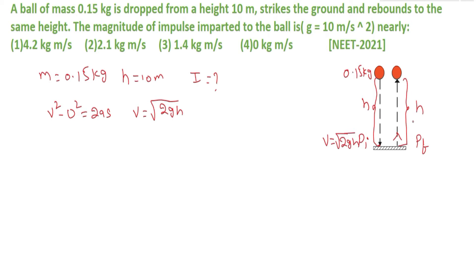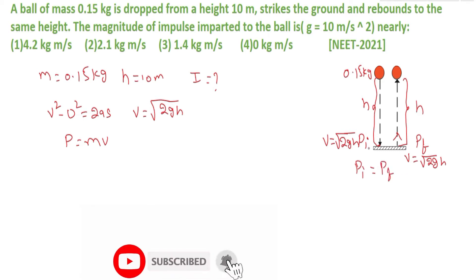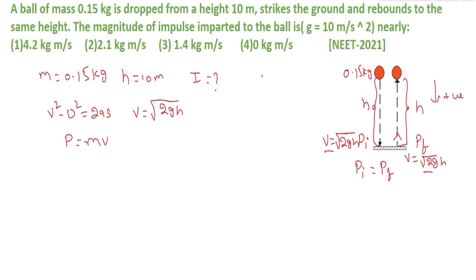Since it rebounds to the same height, it goes back with the same velocity v = √(2gH). Momentum P = mv, so P_I = P_F since both mass and speed are equal. Both v_I and v_F equal √(2gH), so both momenta are equal. Let us take the downward direction as positive.